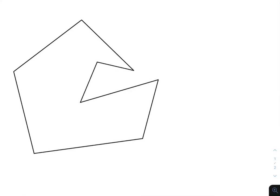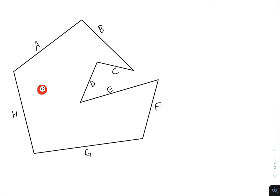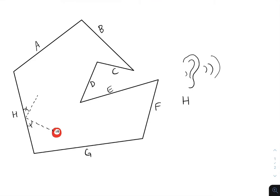Suppose you had a polygon in the Euclidean plane, and it's not regular or anything, and you label its edges with letters. And it's a billiard table, so a billiard ball can bounce around inside this polygon with angle of incidence equals angle of reflection. And every time the ball bounces off of an edge, you hear a sound corresponding to that edge.